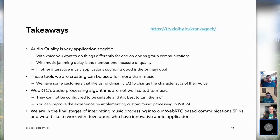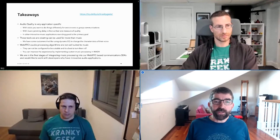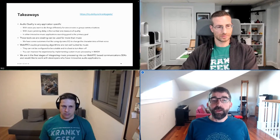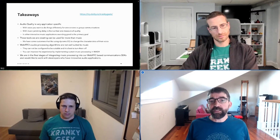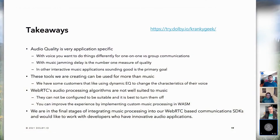To finish with some takeaways: audio quality is very application specific. With voice, you do things differently for one-on-one versus group communication. With music jamming, the number one measure of quality is delay, and people are willing to deal with network-induced and CPU-induced audio artifacts to achieve it. In other interactive music applications, sounding good is the primary goal. The tools we're creating can be used for more than music — some customers really like the dynamic EQ settings to change the characteristics of their voice. WebRTC's audio processing algorithms are not suited to non-voice use cases and are best turned off. We've shown that you can improve the experience by implementing custom music processing in WebAssembly.